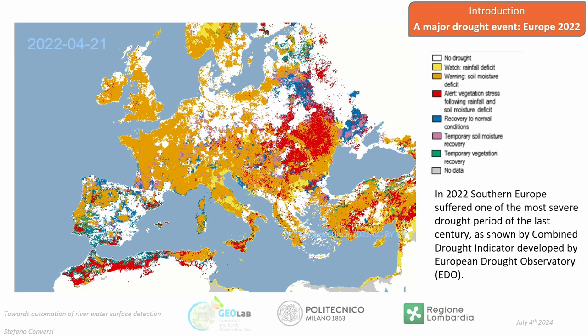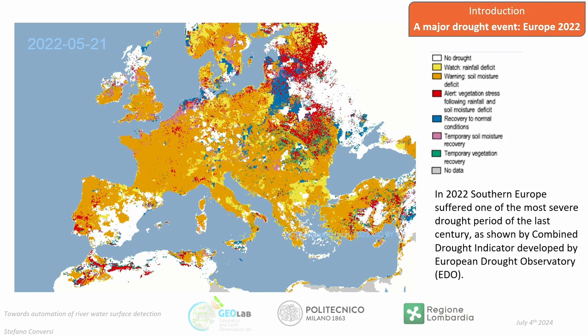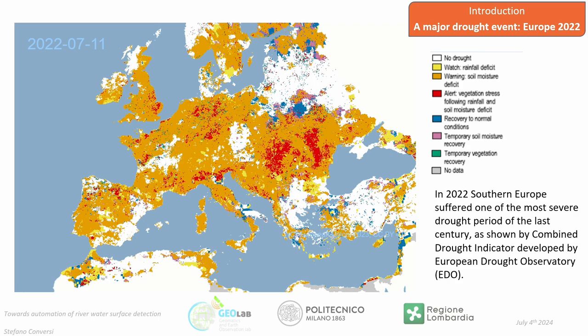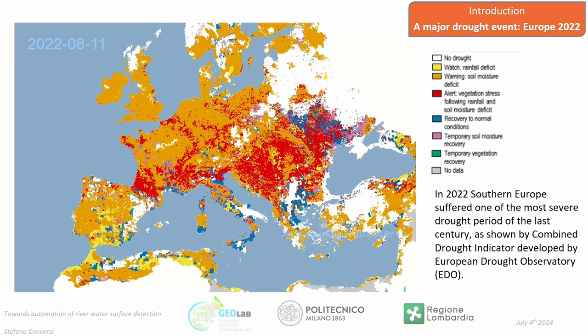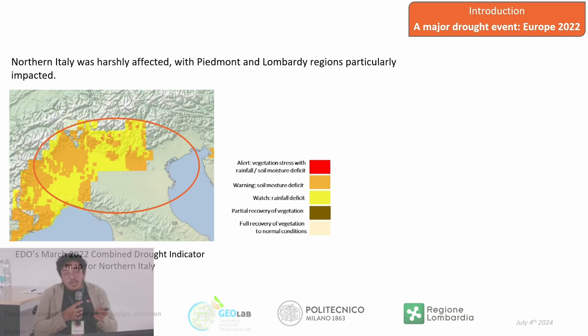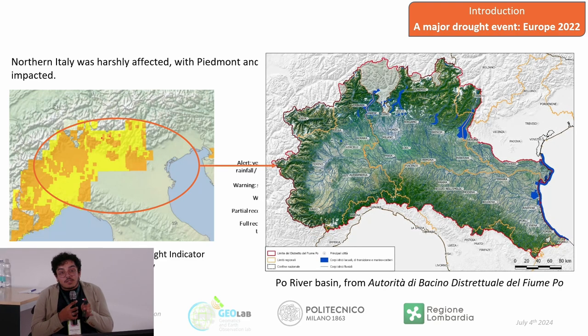In recent years Europe has suffered many drought events. Especially in 2022, severe drought affected all of Europe and, in our case, particularly northern Italy. The official Copernicus drought indicator shows a distributed alert over Lombardy and Piedmont regions, and more generally across the entire Po River Basin.